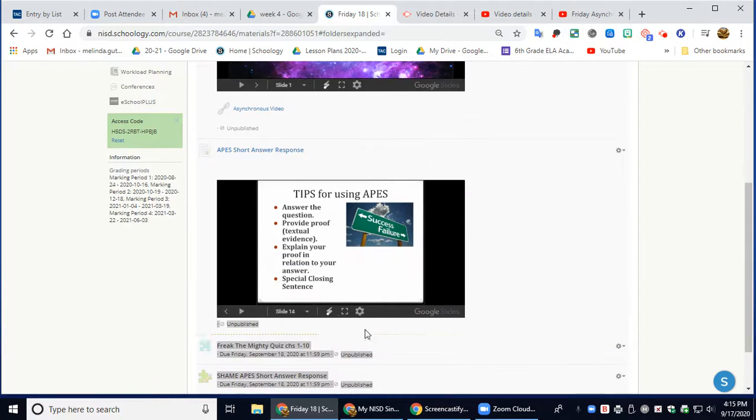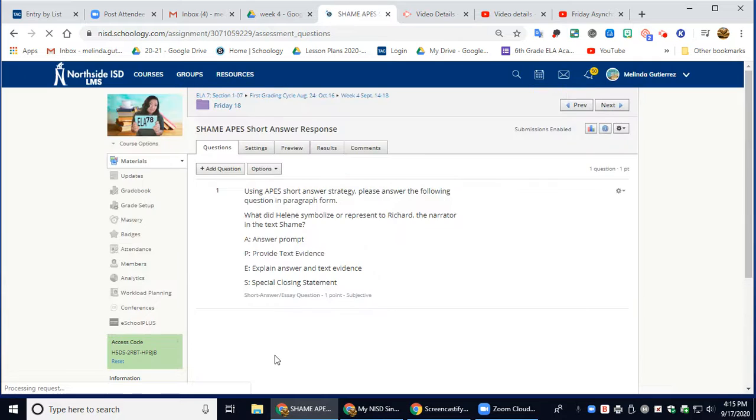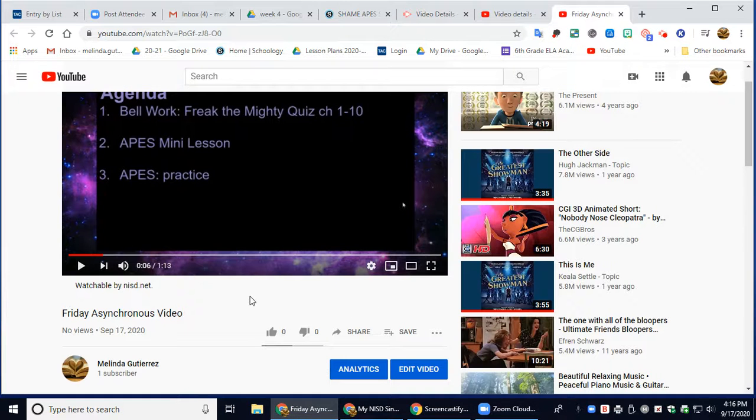When you are done with this, please go to this activity, open up the assignment, and answer this question: What did Helene symbolize or represent to Richard, the narrator, in the text 'Shame'? Familiarize yourself with the text. You may reread it if you would like—it's going to be linked there for you. Tell me what you think Helene represented to Richard. He thought about her his whole life until he was in his 30s. What did she symbolize to him? Answer the prompt, provide text evidence, explain the text evidence, and give a closing sentence. Have a great day, gladiators. Go buy a cat.